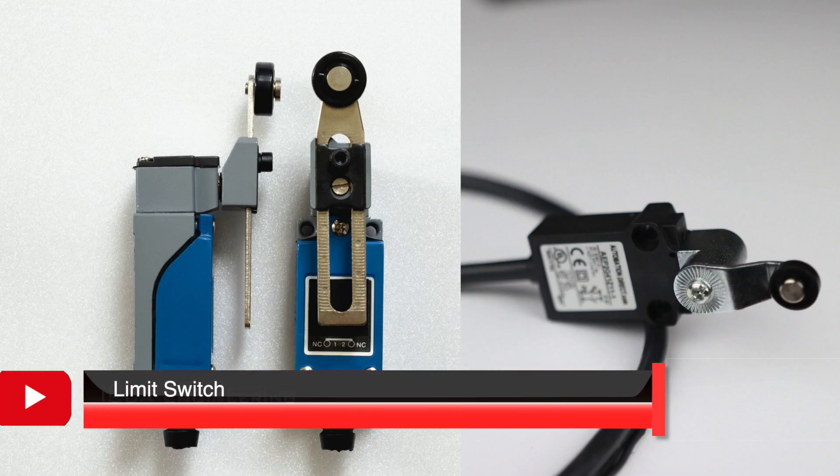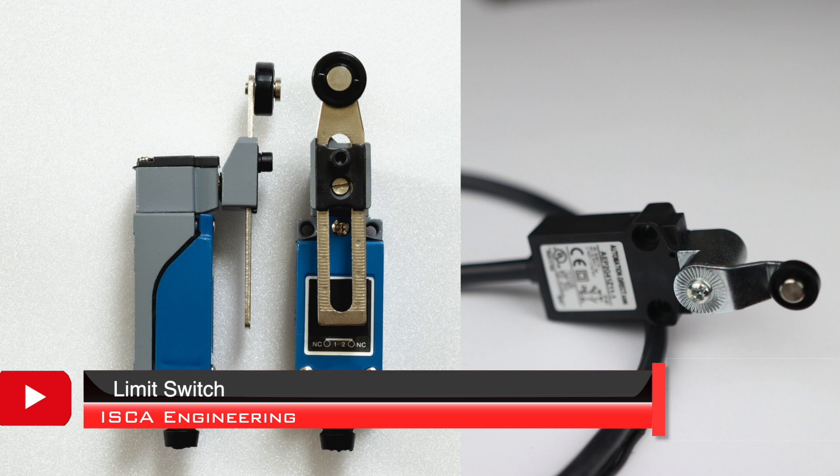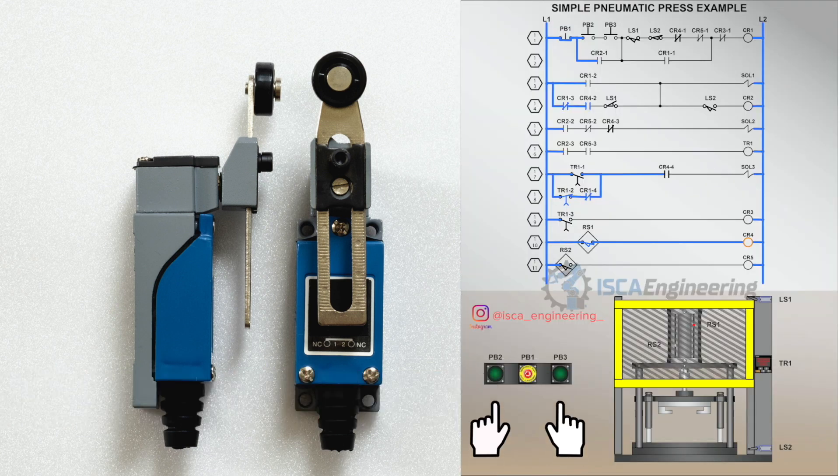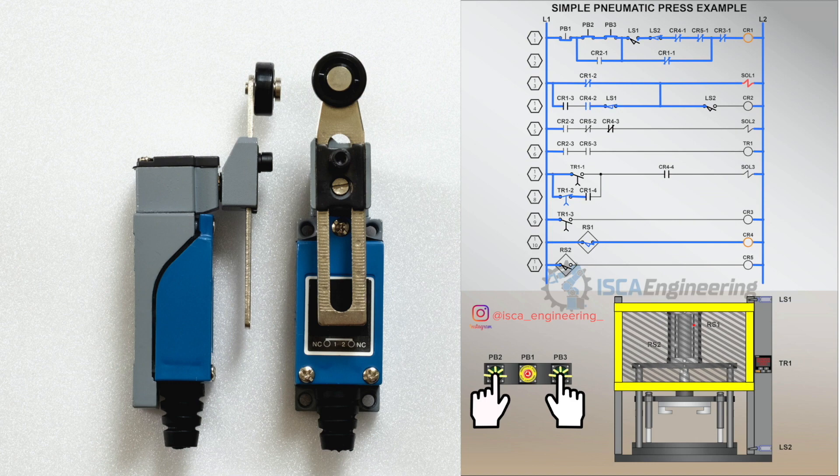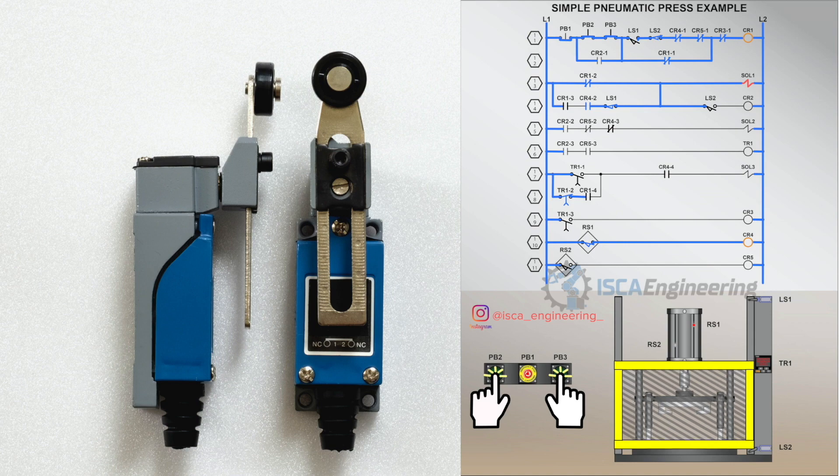Let's first talk about the limit switch and shift to the others. A limit switch is an electromechanical device that can be used to control machinery as part of a control system, as a safety interlock, or even used to count objects passing by.